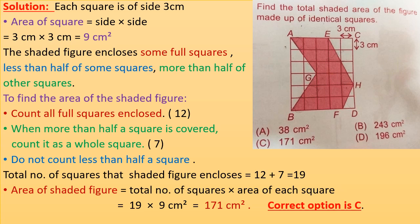There are two ways to solve this question. I am demonstrating the first method here and the second method in the next question. Each square is of side 3 cm, so the area of each square equals side times side equals 3 cm times 3 cm equals 9 cm squared.